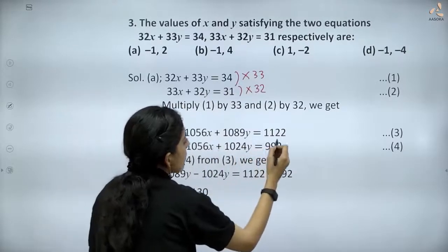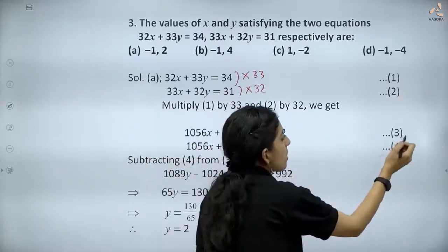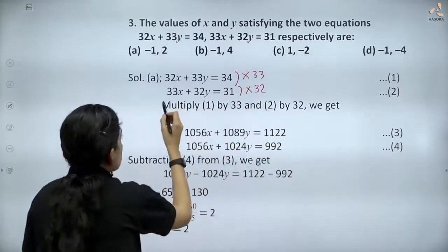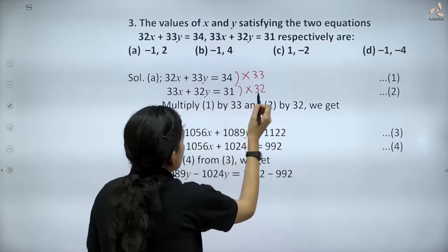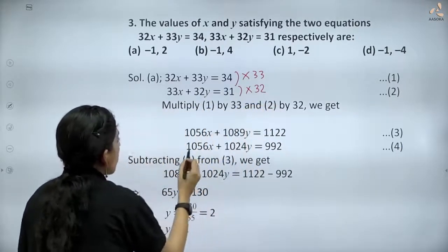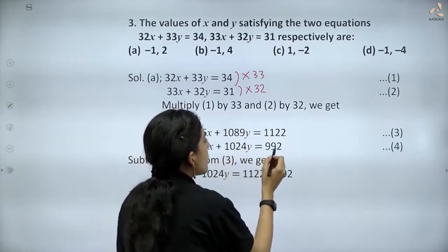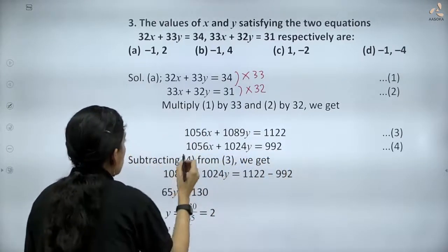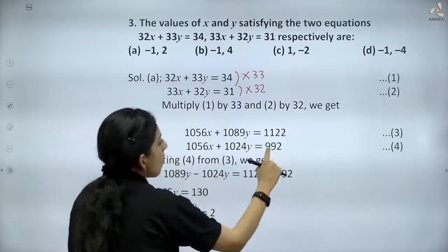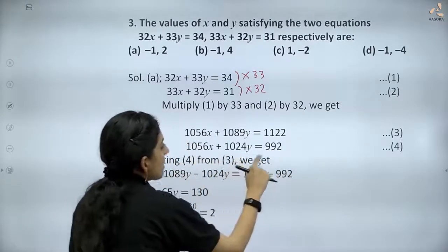And the second equation when multiplied by 32 gives us 1056x + 1024y = 992. We mark this as equation (4). Now subtracting equation (4) from equation (3), we get...